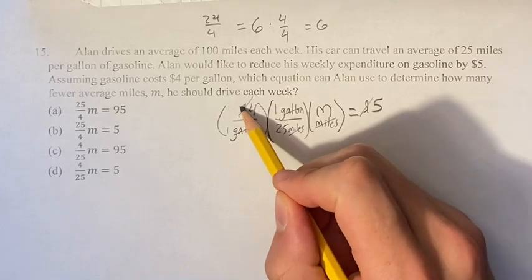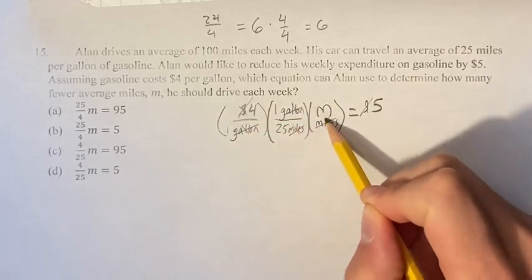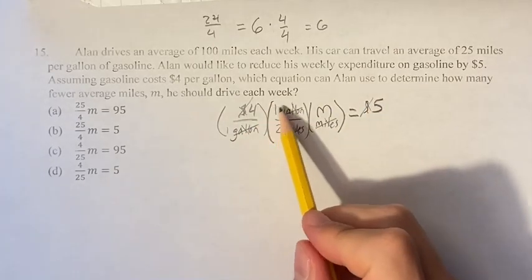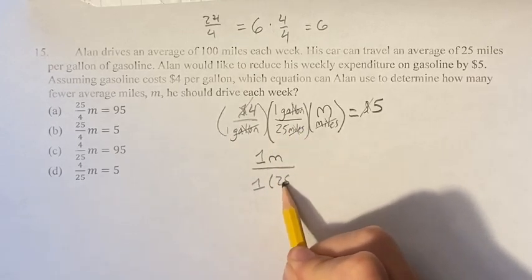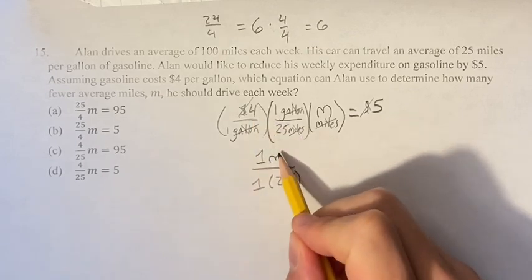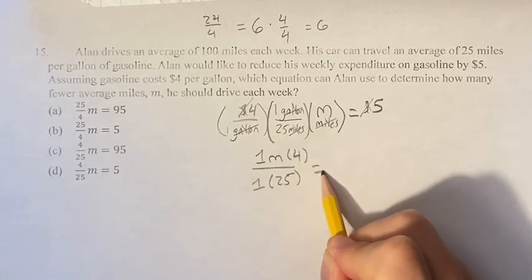So ignoring what we've crossed out, so we've crossed out this, this, this, this, this, and this, we have 1 times M over 1 times 25 times 4 is equal to 5.